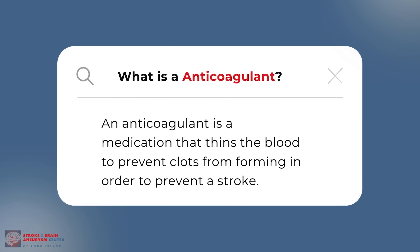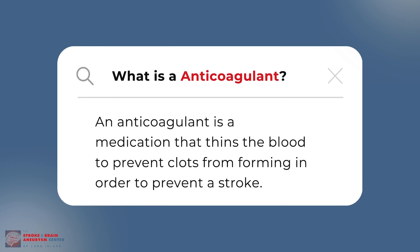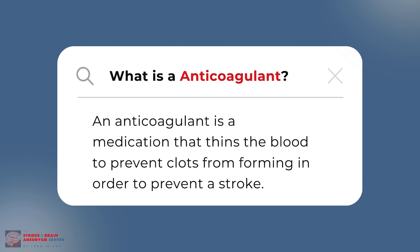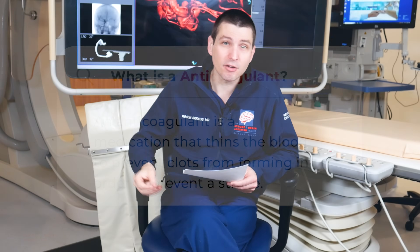Another common question is: what is an anticoagulant? An anticoagulant is a medication that thins the blood to prevent clots from forming, in order to prevent a stroke. That's often used in the setting of an abnormal heart rate — what we call an arrhythmia — and one of the most common ones, especially in folks over the age of 55, is atrial fibrillation.